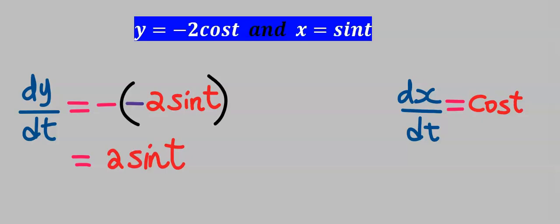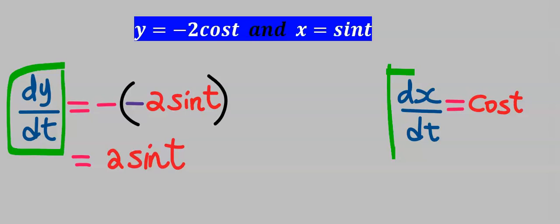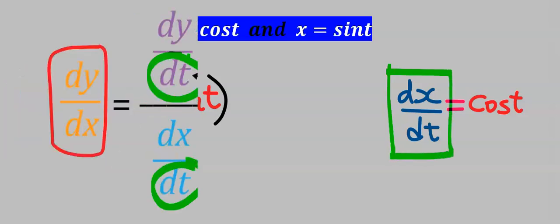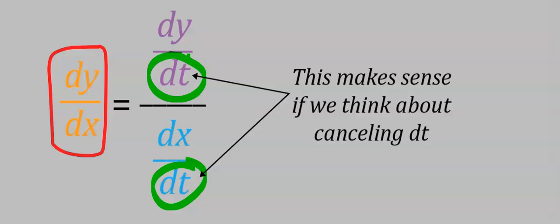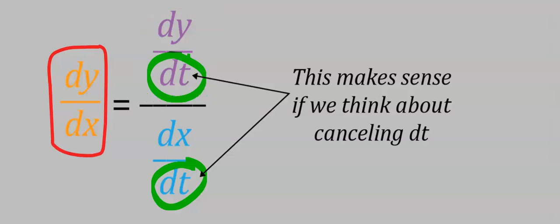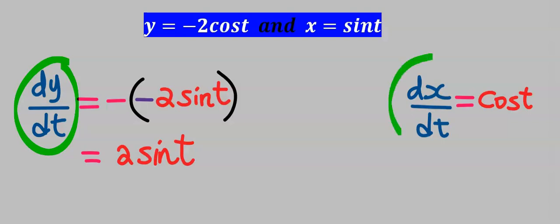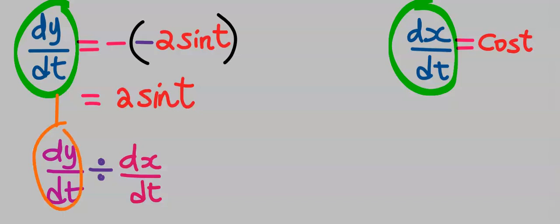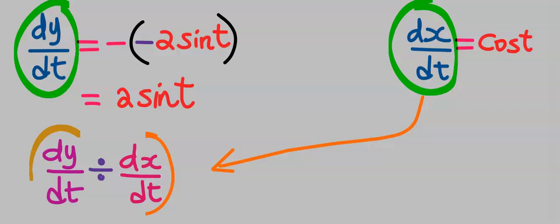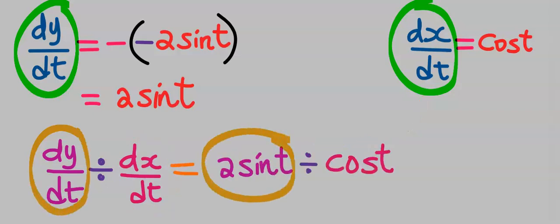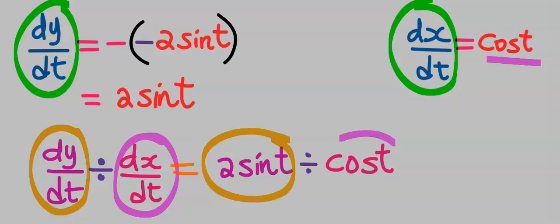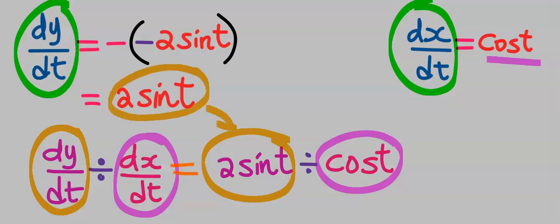Next, to find dy/dx we are going to use dy/dt divided by dx/dt, according to the law governing the derivative of parametric functions. Always remember that the result with dy will always come first at the top. The value of dy/dt is 2sin(t) and the value of dx/dt is cos(t).